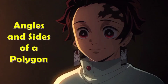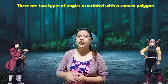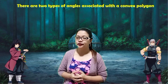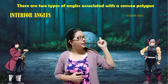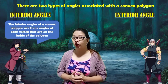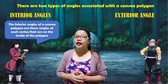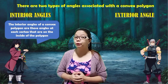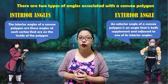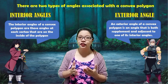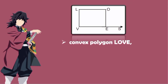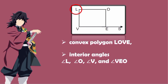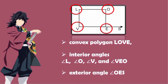Angles and Sides of a Polygon. There are two types of angles associated with convex polygons: the interior angles and the exterior angles. Interior angles of a convex polygon are those angles at each vertex that are on the inside of a polygon. While an exterior angle of a convex polygon is an angle that is both supplementary and adjacent to one of its interior angles. Look at this given illustration — that is convex polygon L-O-V-E. The interior angles of this polygon are angle L, angle O, angle V, and angle V-E-O, and the exterior angle is angle O-E-S.